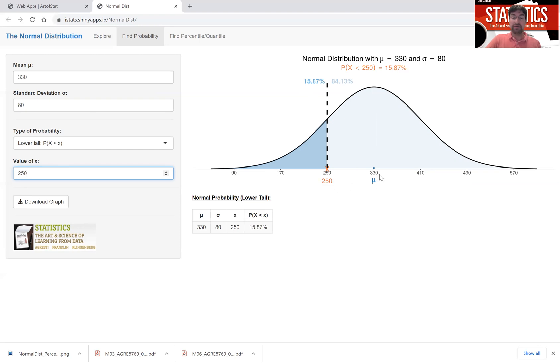And why 250? Note that 330, the mean, minus one standard deviation, minus 80, is exactly 250. So within one standard deviation you have 68%. That leaves 32% on the outside. 32 divided by 2 is 16, so roughly 16 to either side. So it's not surprising that this percentage is roughly equal to 16%.